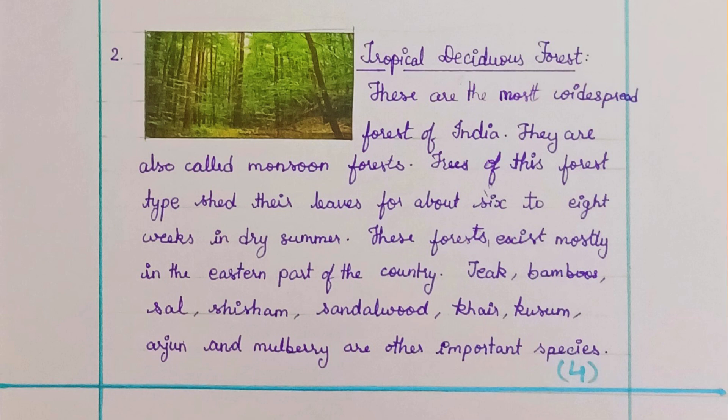Tropical Deciduous Forests are the most widespread forests of India, also called Monsoon Forests. Trees of this forest type shed their leaves for about six to eight weeks in the dry summer. These forests exist mostly in the eastern part of the country. Teak, Bamboo, Sal, Shisham, Sandalwood, Khair, Kusum, Arjun, and Mulberry are the important species.